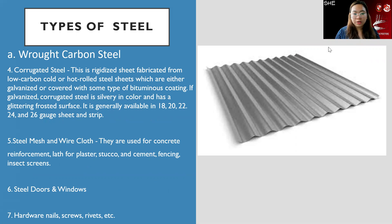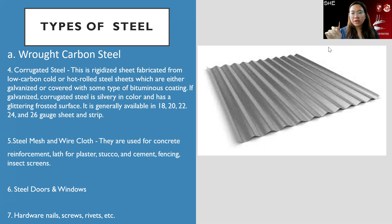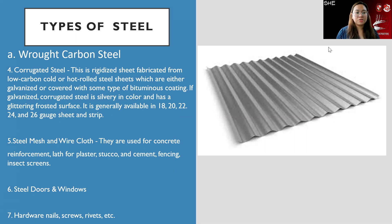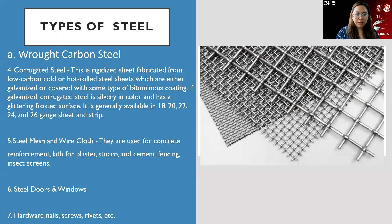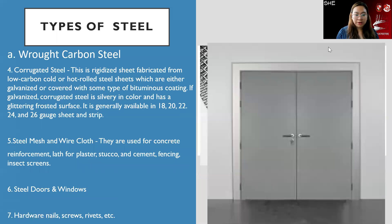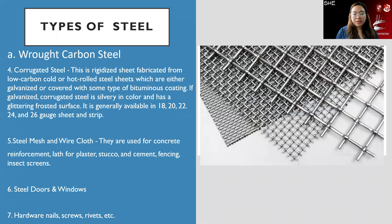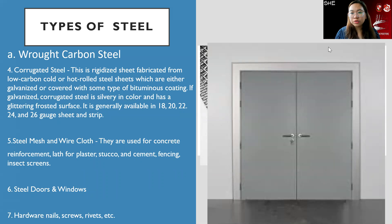Corrugated steel is used for roofing — fabricated from low carbon cold or hot rolled steel sheets, either galvanized or covered with a bituminous coating. Available gauges are 18, 20, 22, 24, and 26. Remember: the higher the gauge number, the thinner the material — so gauge 24 is thicker and better than gauge 26. Steel mesh and wire cloth are used for concrete reinforcement, plaster stock, cement fencing, and insect screens. Steel doors, windows, hardware like nails, screws, and rivets are also steel products.